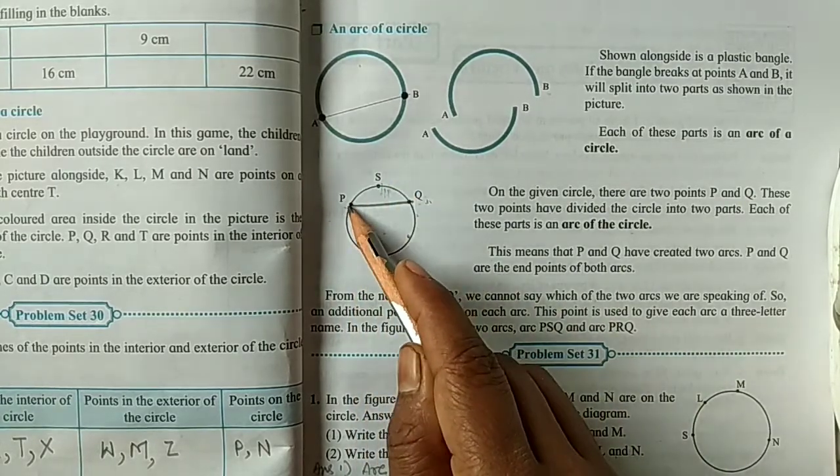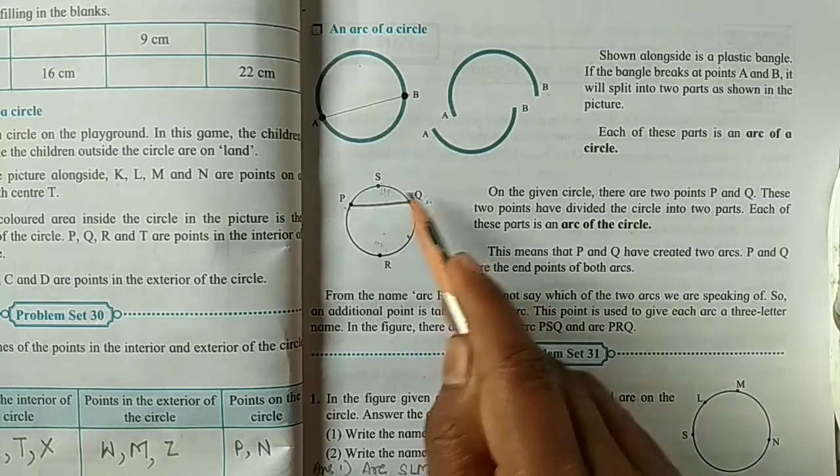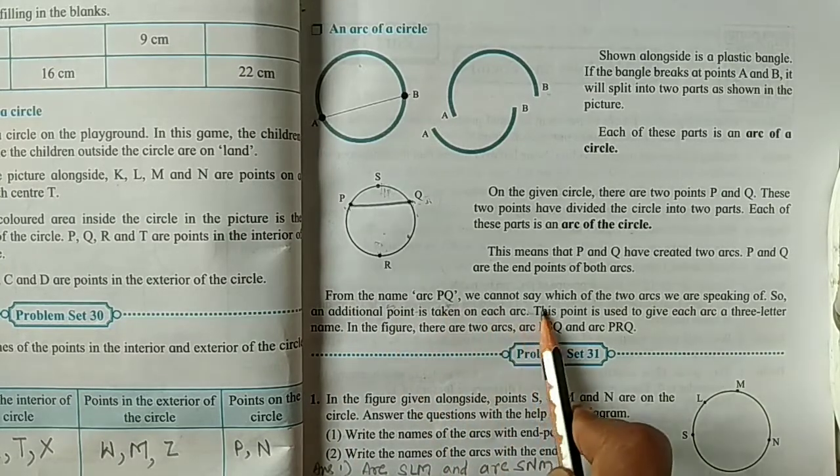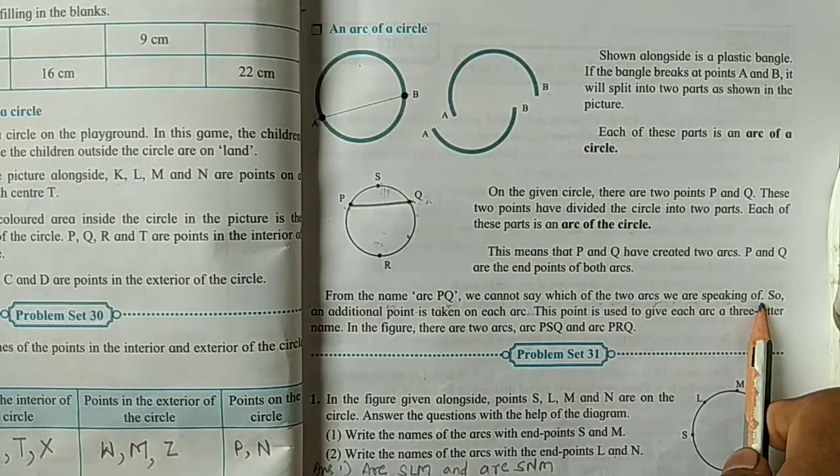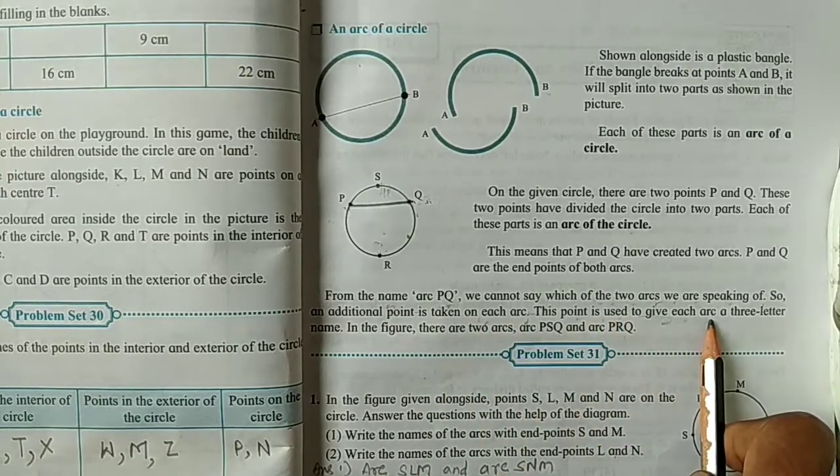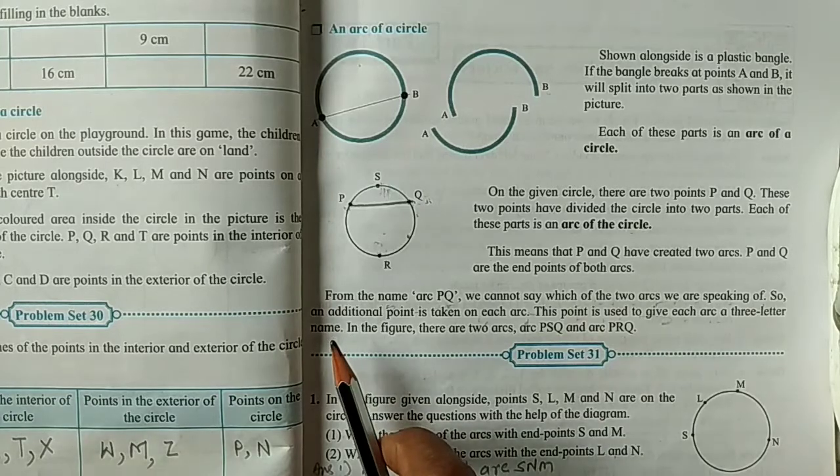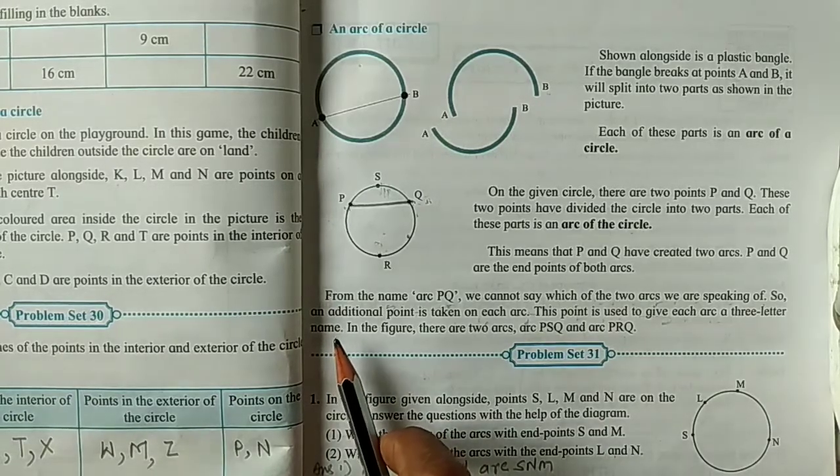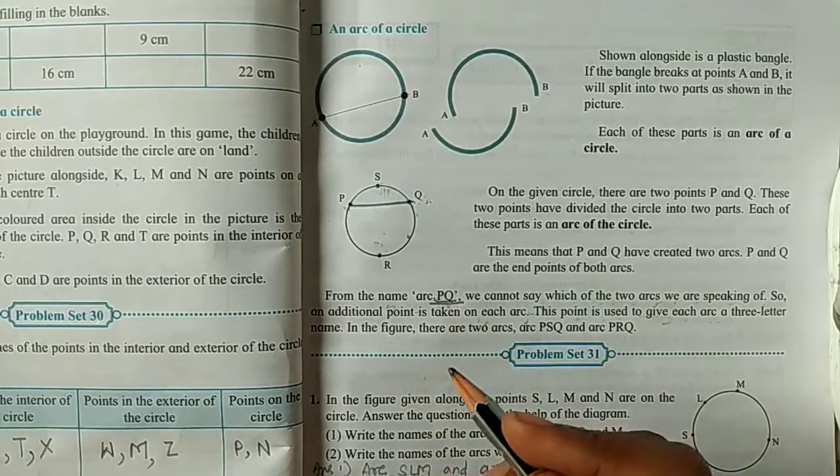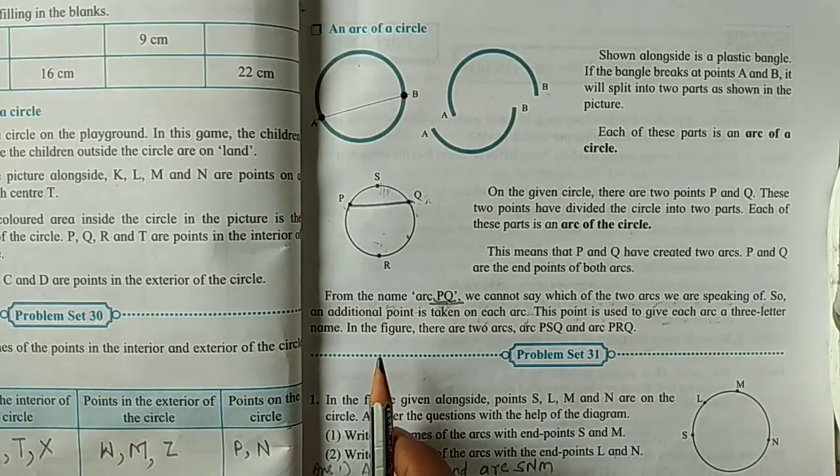Yes, because here could be the endpoint of both arcs. We cannot say which of the two arcs we are speaking of. So an additional point is taken on each arc. This point is used to give each arc a three-letter name. So we cannot say arc PQ. We are not using two letters for saying any arc name. We cannot use two alphabet letters. So we use one another extra point for saying any arc name.